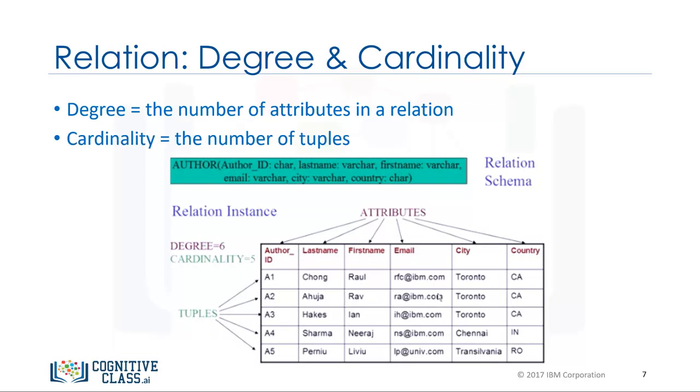In this example, the degree is six because there are six columns, and the cardinality is five because there are five tuples or rows.